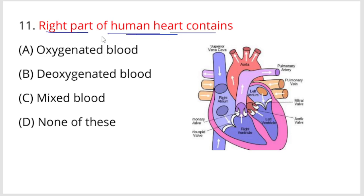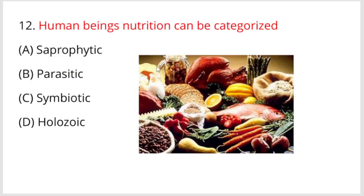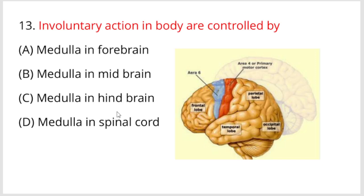Next, right part of human heart contains deoxygenated blood. Option B is the right answer. Deoxygenated blood, important question. Human beings nutrition can be categorized as follows. Deoxygenated blood is the right answer.